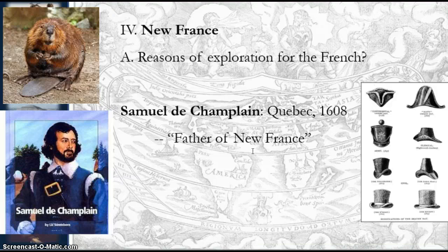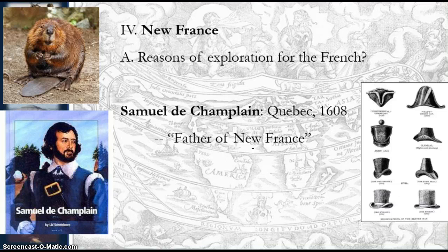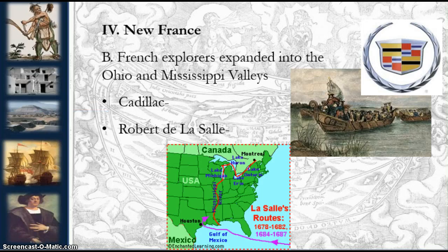Next, we have Samuel de Champlain, also known as the father of New France. He established Quebec in 1608, a year after the English founded Jamestown in Virginia. Champlain was also responsible for alienating the mighty Iroquois Indians. This action would set the tone for the French and Indian War, where the French were allied with the Huron and Algonquin tribes, and the British were aligned with the Iroquois.